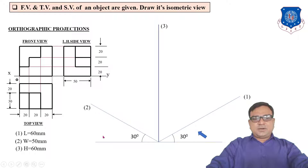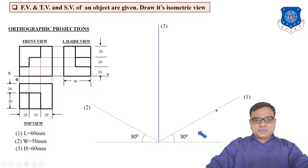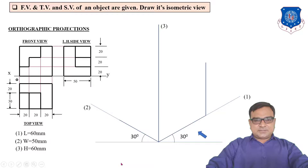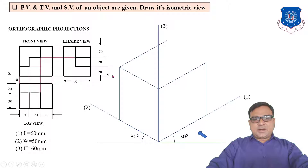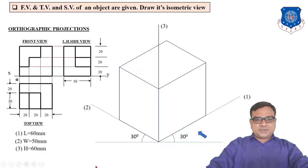Before the final drawing we use thin or light construction lines. From the origin along line number 1 we draw 60 mm, along line number 2 we draw 50 mm, and along line number 3 we draw 60 mm. Draw a line parallel to line number 1, from that point draw a line parallel to line number 2, then parallel to length and parallel to width. Before drawing the object we prepare one box of length, width and height. This is the border of our object.